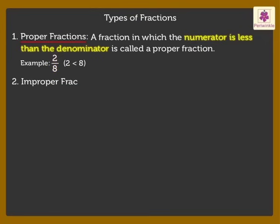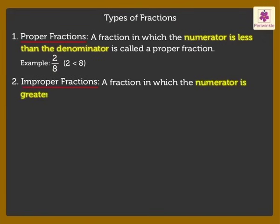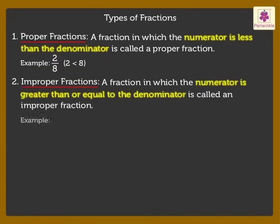2. Improper fractions. A fraction in which the numerator is greater than or equal to the denominator is called an improper fraction. For example, 5 is greater than 2. Thus, we say that 5 upon 2 is an improper fraction. 4 is equal to 4. Thus, we say that 4 fourth is an improper fraction.